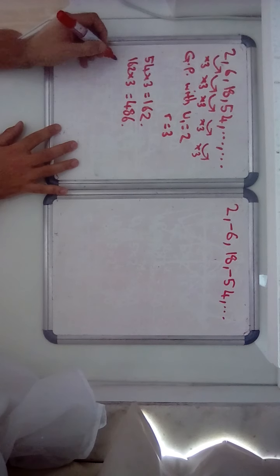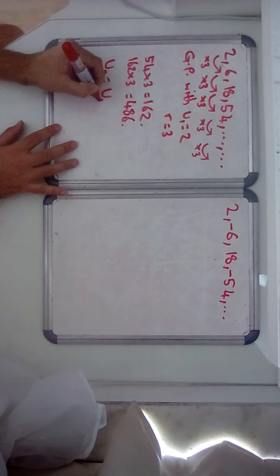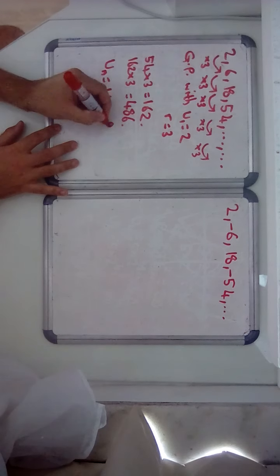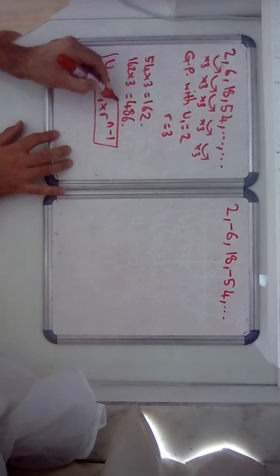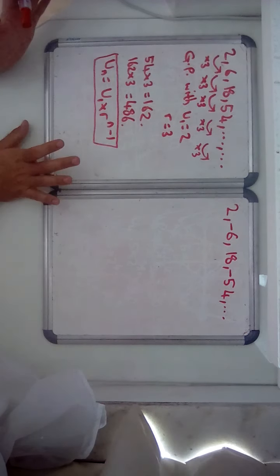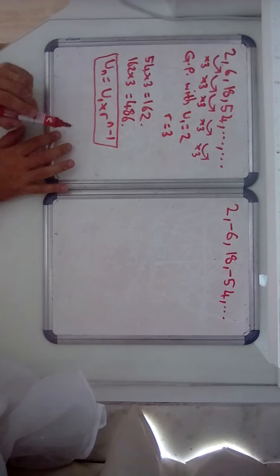Then the formula for the nth term. You're not going to get it in your formula sheet but you need to remember: un equals u1 times r to the power n minus 1. This is by far the most common and it's useful, you'll definitely use it in your IB, so it's a good formula to remember.